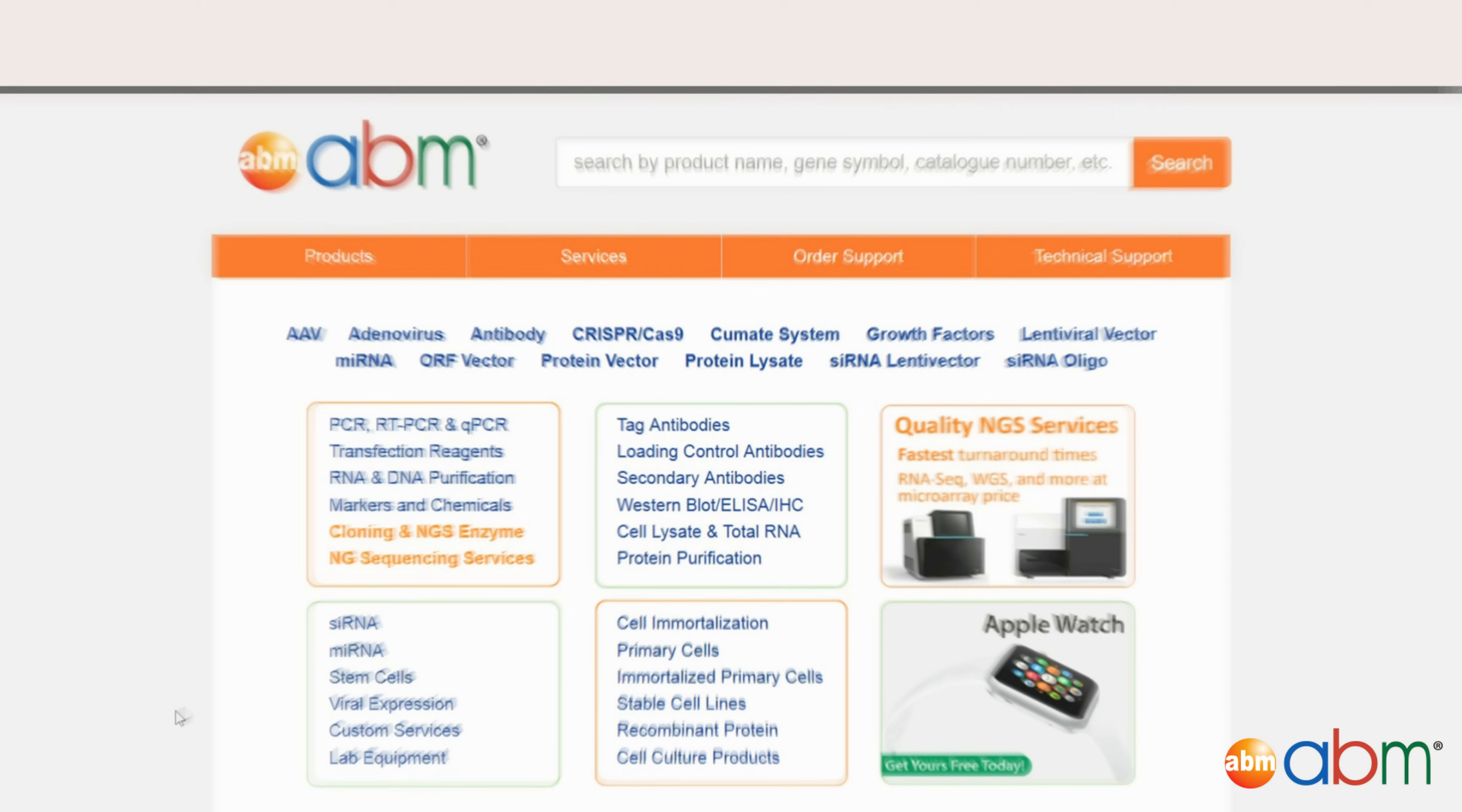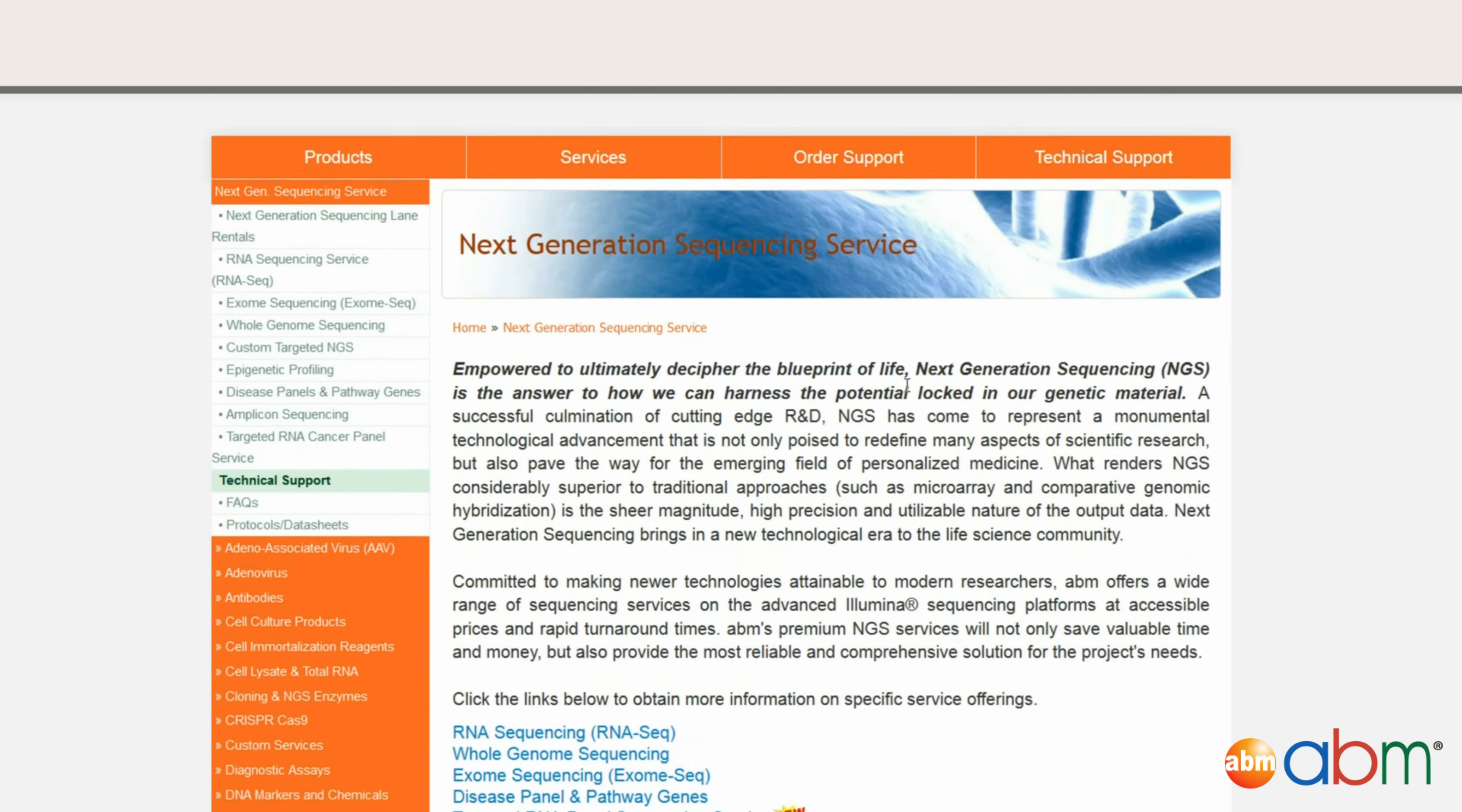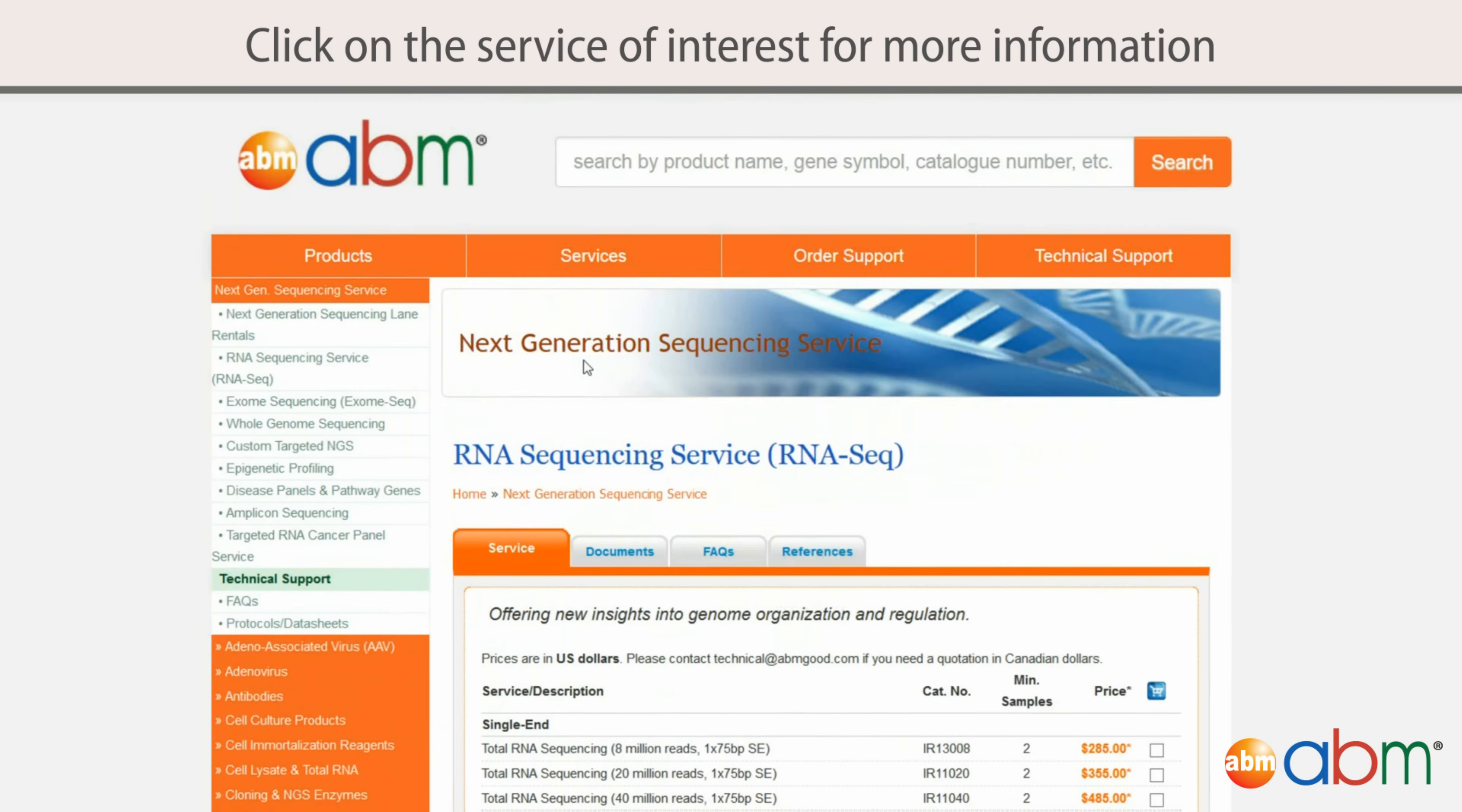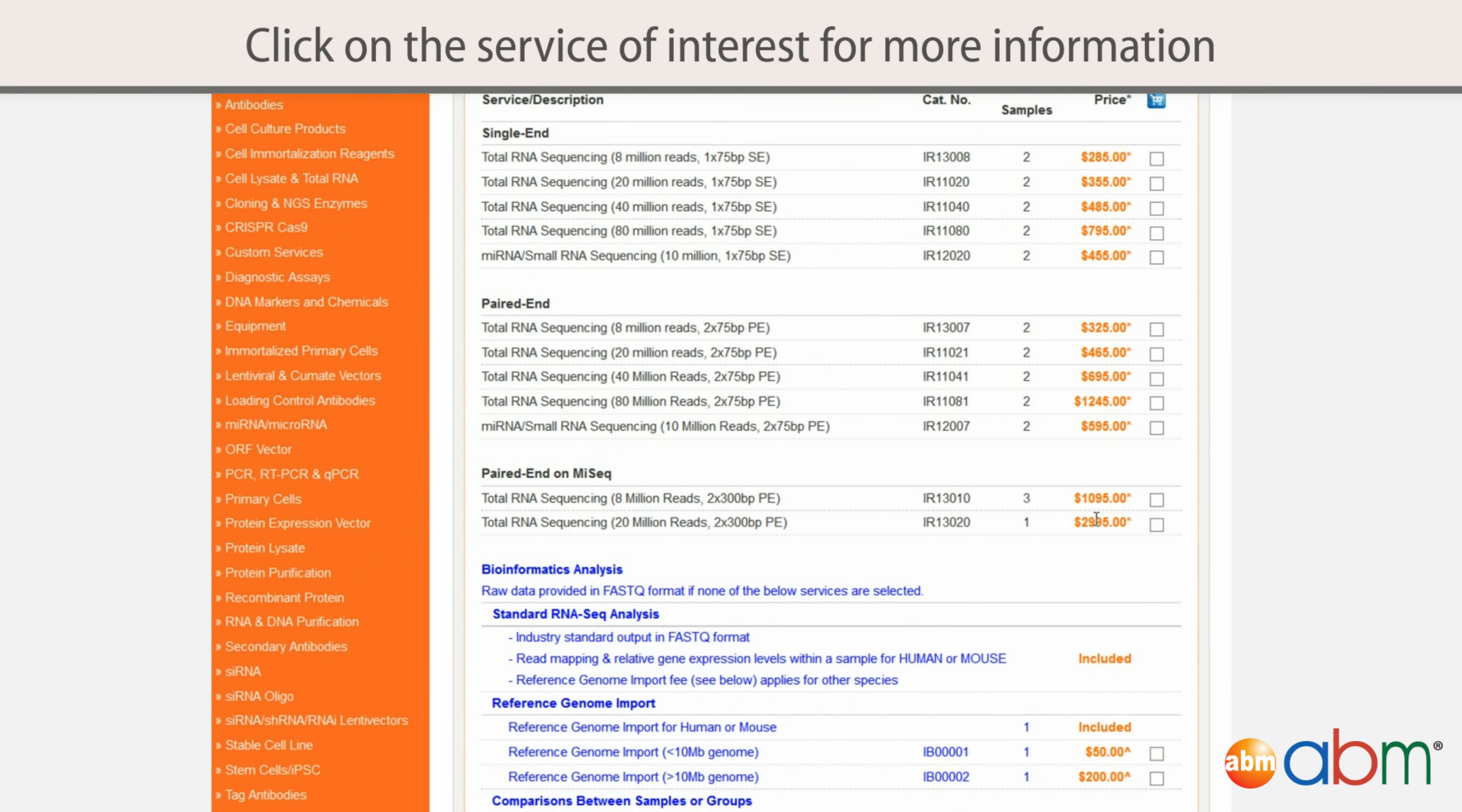To be able to access our services, please visit our website at www.abmgood.com. And from there, click on the NGS sequencing services link. This will load our NGS service webpage, which details all of our available services. Clicking on a service of interest will showcase the technical details, pricing, and bioinformatics solutions that are related to that particular service.